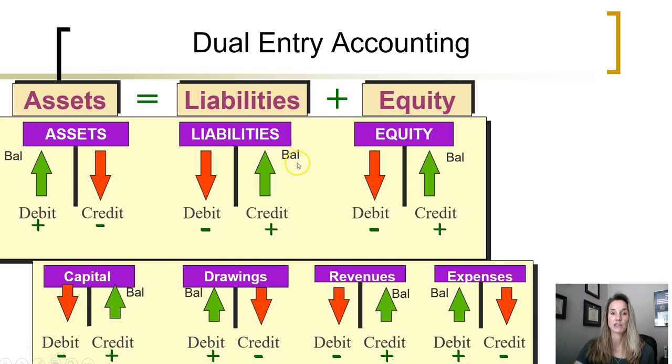Liabilities have a balance on the credit side, which means to increase a liability account, we credit it. To decrease it, we debit it.